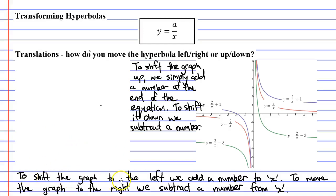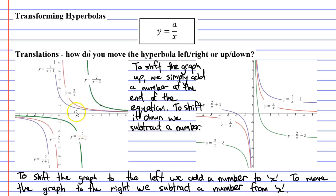To shift the graph to the left, we add a number to x; to move the graph to the right, we subtract a number from x. Adding 1 to x shifted the graph to the left one place; subtracting 3 from x shifted the graph to the right three places. That concludes our video showing all the different ways we can transform hyperbolas. Remember to read the description below for links to work booklets that relate to this video.